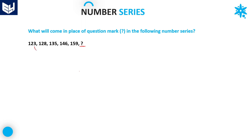Let's look at what logic it is following. From 123 to 128 the number increases by 5; from 128 to 135 it increases by 7; from 135 to 146 that is plus 11; and from 146 to 159 which is plus 13. So the differences are plus 5, plus 7, plus 11, plus 13 — you have to find what value comes next.